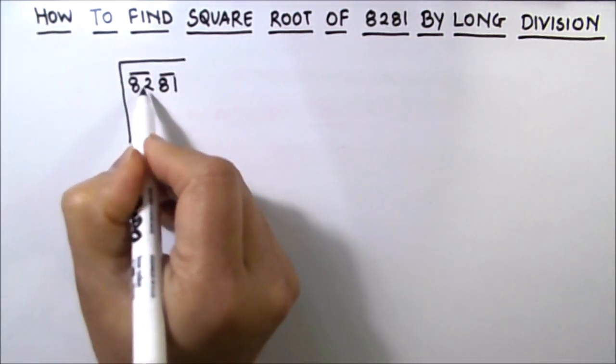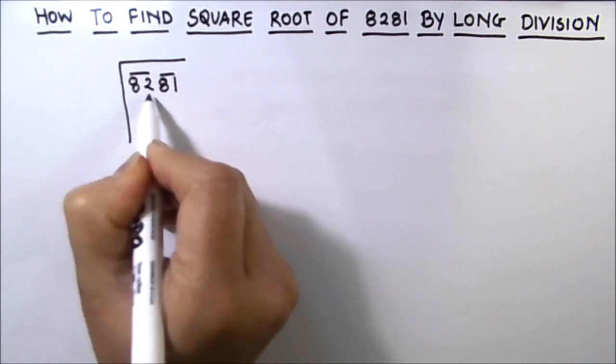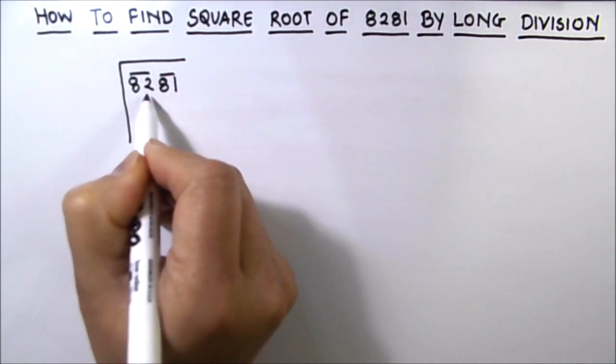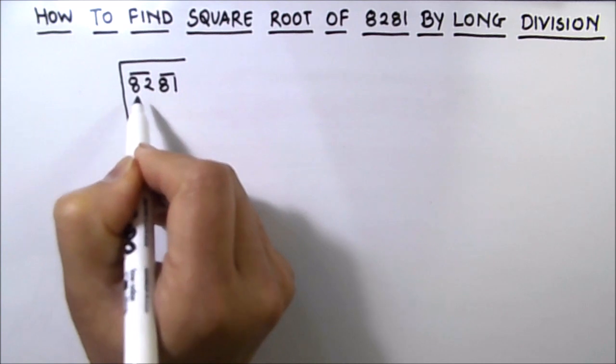Now the second step is to find the square number which is equal to the first group, which is 82, or less than 82.